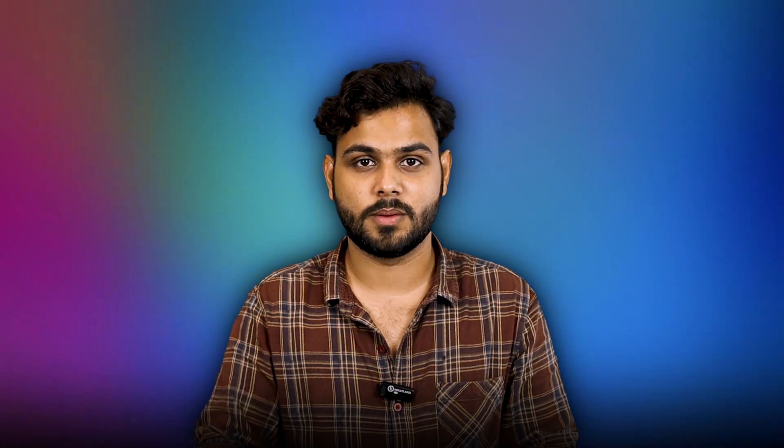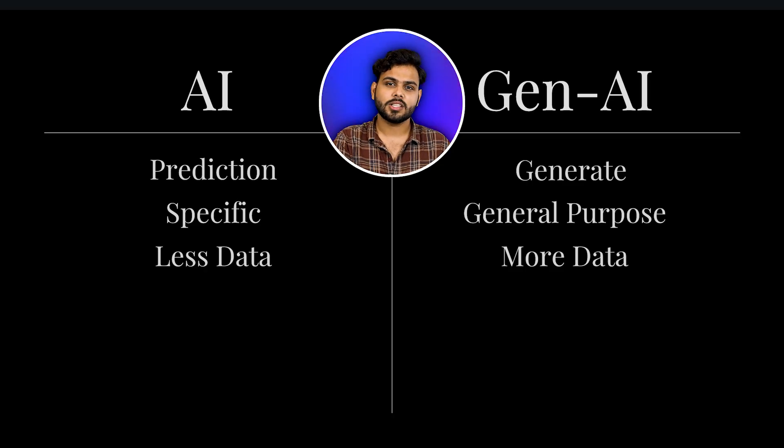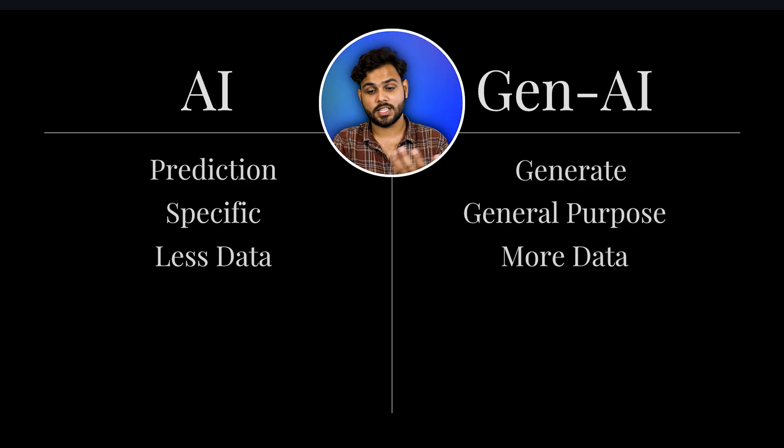In AI, we can have an algorithm that can just generate new faces, but that same algorithm cannot generate a new scenery, cannot generate a car, or a cat and a dog sitting on the moon enjoying wine. On the other side, Generative AI has algorithms that are general purpose in nature — an algorithm that can generate one image can generate a totally different scenario as well. Because AI algorithms are very specific, they require less data, while Generative AI algorithms require a lot more data.